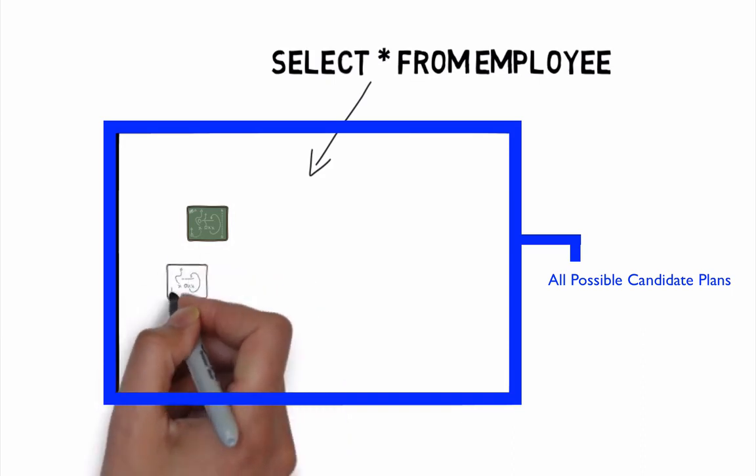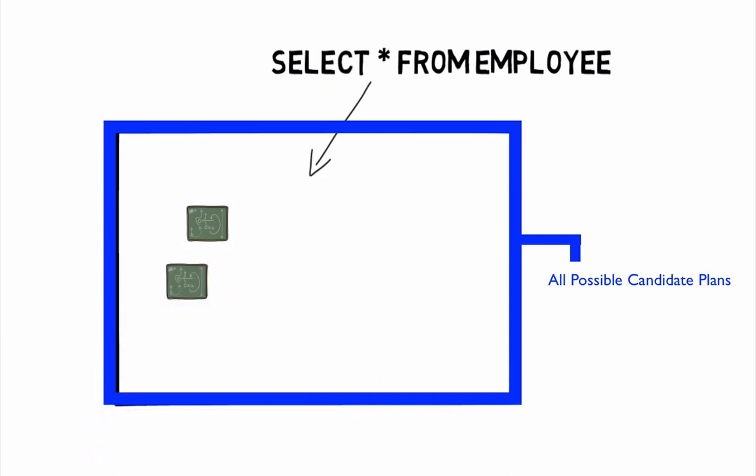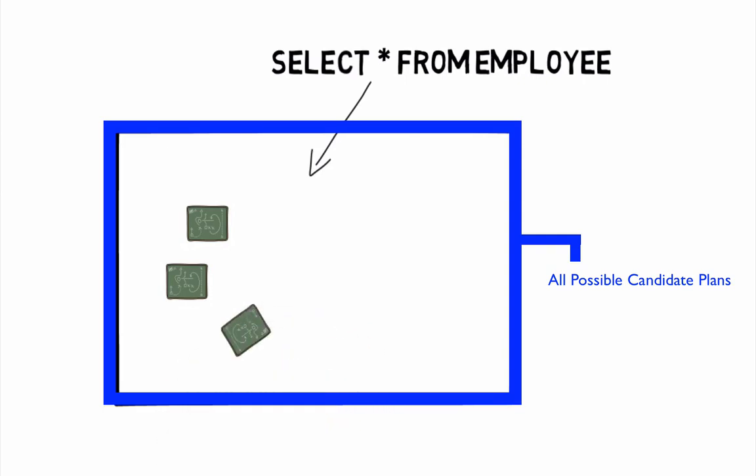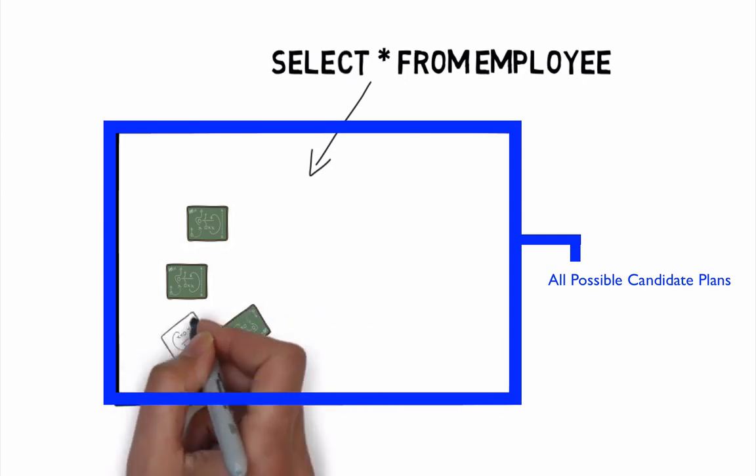We define a search space for a given query as a set of all the possible execution plans for that query. Any possible plan in the search space returns the same results.